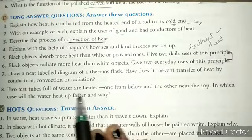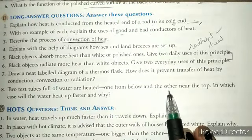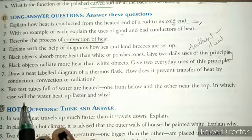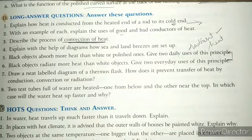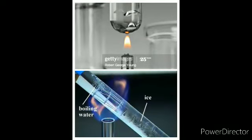The last question: two test tubes of water are heated — one from below and one from near the top. Which will heat up faster and why? The test tube heated from below will heat up faster. When we heat water from below, molecules at the bottom heat up and expand, becoming lighter and moving upwards. This sets up convection currents that heat the entire water quickly. This completes the chapter, and the next chapter will be covered in the next video.